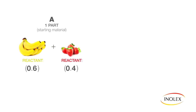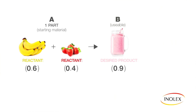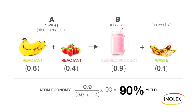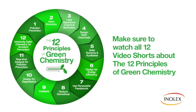So say if I take A and I take one part of A and I get 0.9 parts of B out, that would be an atom economy of 90%. So you want to use a process that conserves as many of the atoms in the original starting material as you translate that down to the final product.